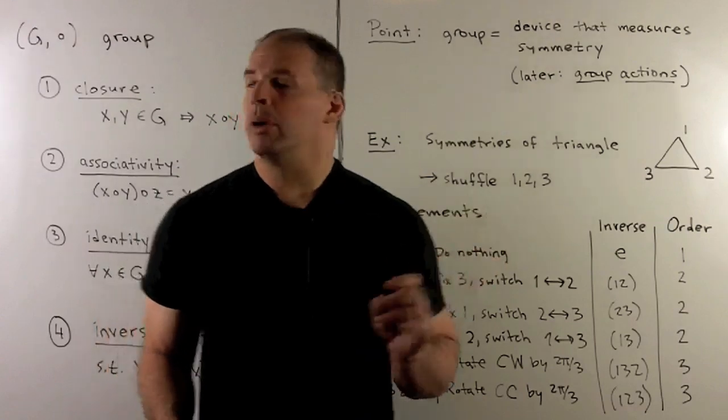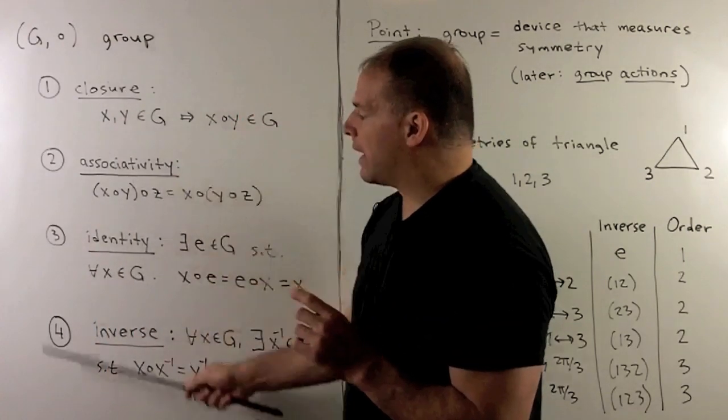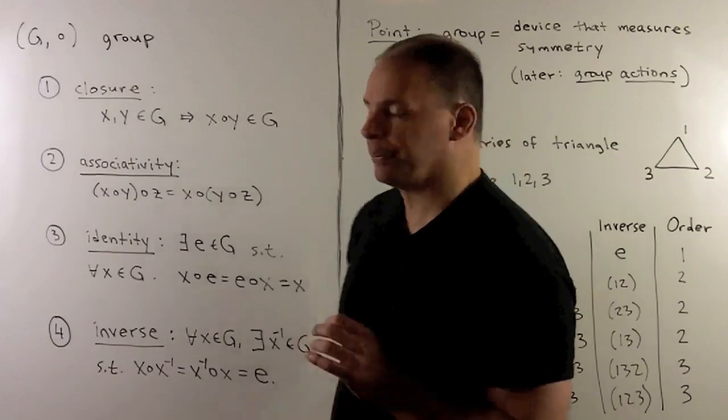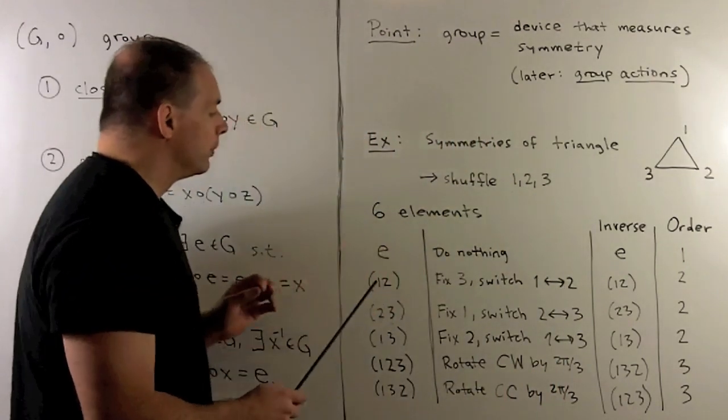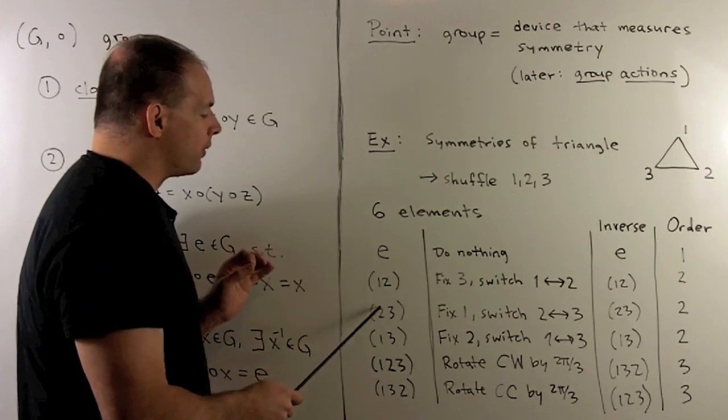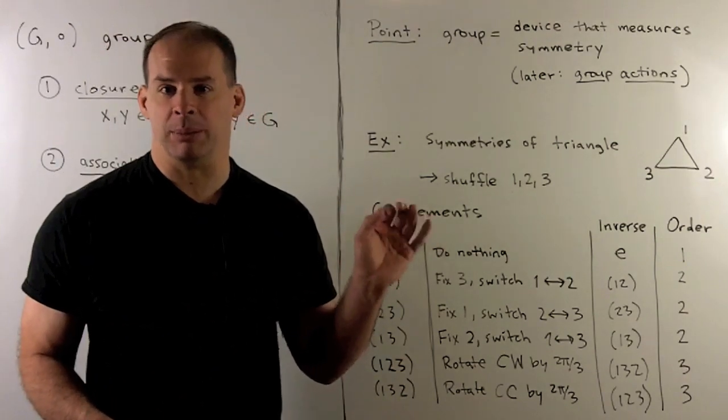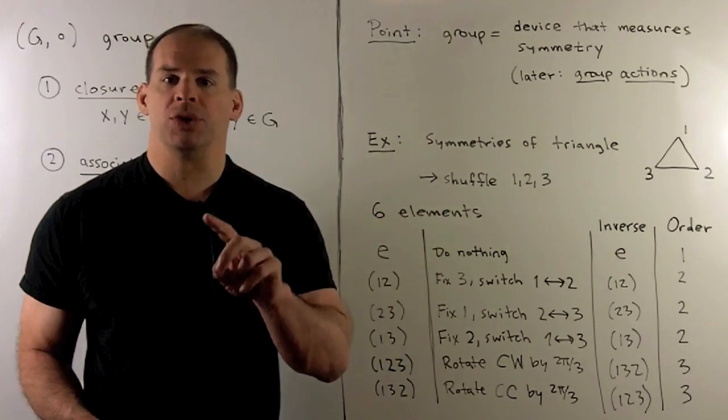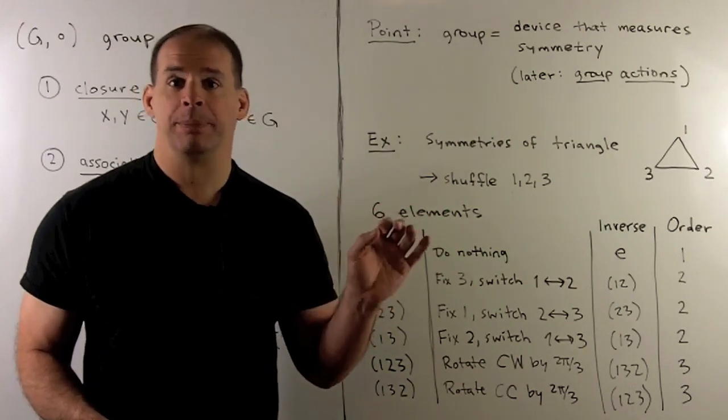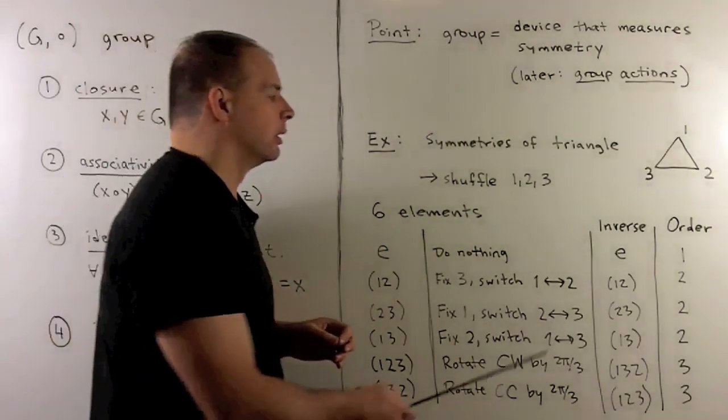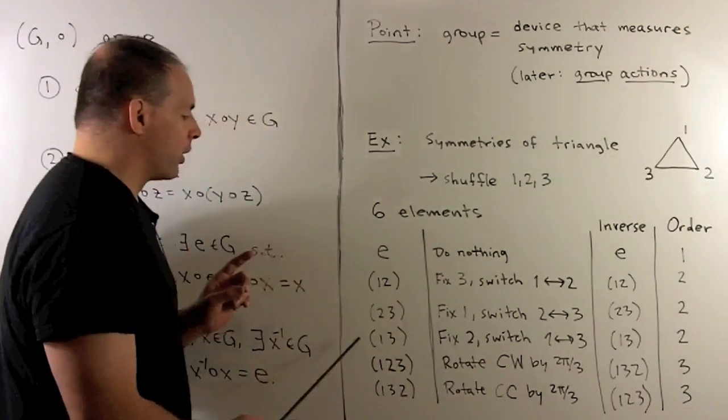To show we have a group, we have to go through the following four properties. For here, we're just going to focus on the inverse. Note, for our reflections, if I do a reflection twice, I'm back in the identity position. So if I take (1,2) times (1,2), I get the identity. That means (1,2) is its own inverse. Same for the other reflections.